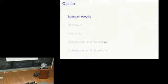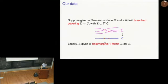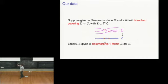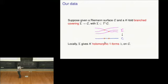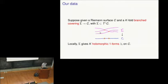So first, spectral networks. A spectral network is something you construct out of some data. The data is pretty simple: we're given a curve C, which we think of as a compact Riemann surface, and we're given a K-fold branch covering of it. So sigma is a K-to-1 covering over C. Sigma is not an abstract covering but lives in the holomorphic cotangent bundle of C. Locally on C, I look at the K sheets of this covering; each one lives inside the cotangent bundle as a complex submanifold, giving me locally just K holomorphic one-forms, which I label lambda_1 up to lambda_K.